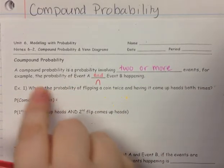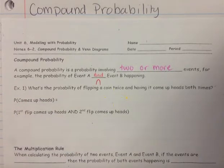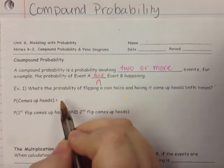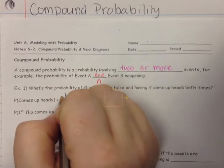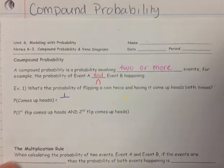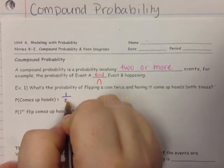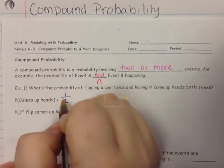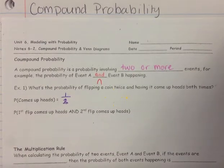The first thing we want to understand is what is the probability of it just coming up heads? In order for it to come up heads, there's only one way that a coin can come up heads. There are only two possible things a coin can come up — it can come up heads or tails. So we would have one out of two. The probability that a coin will be heads is one out of two.